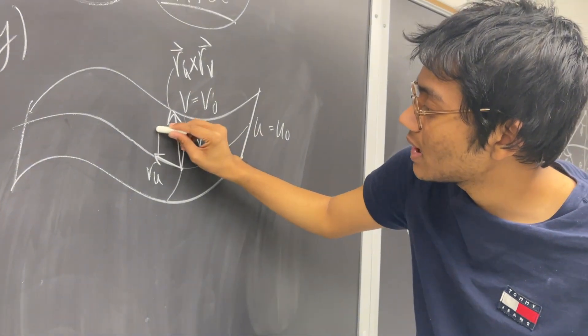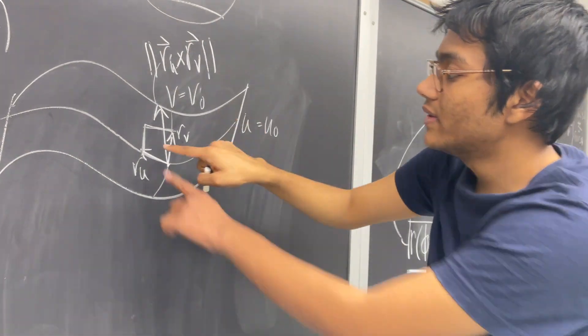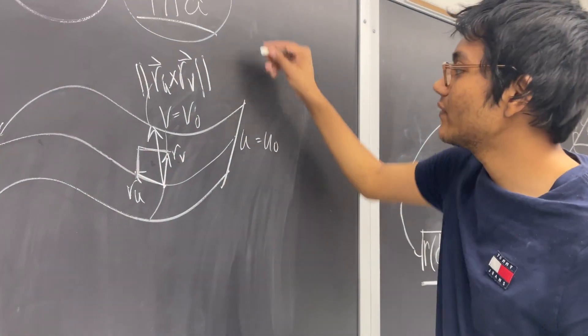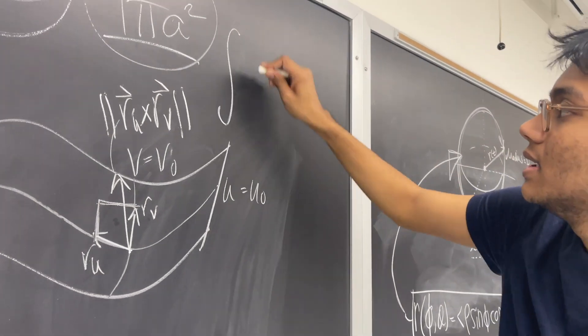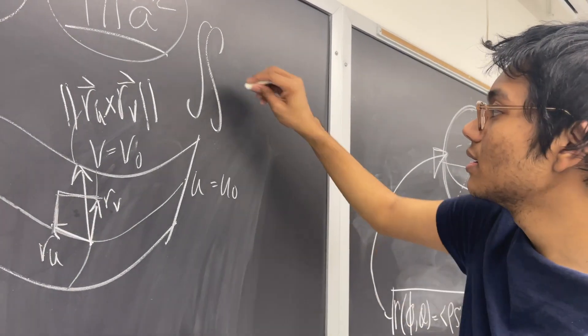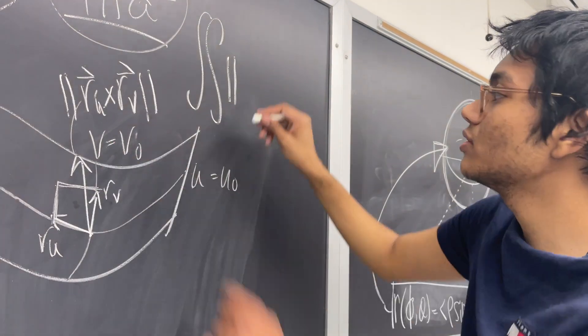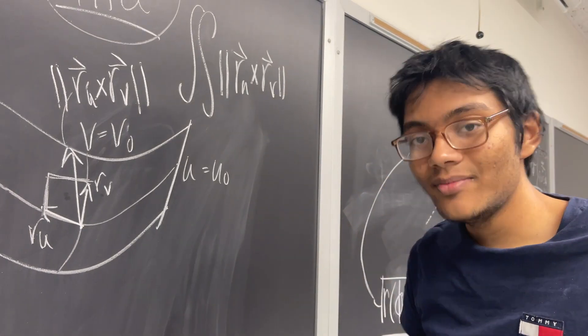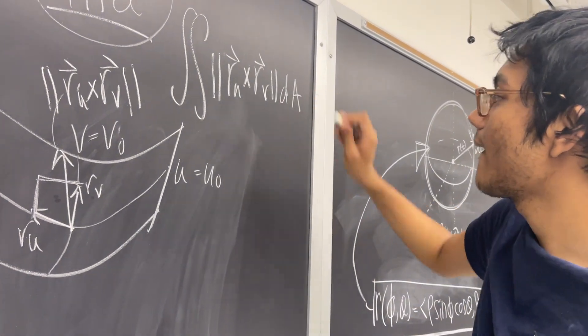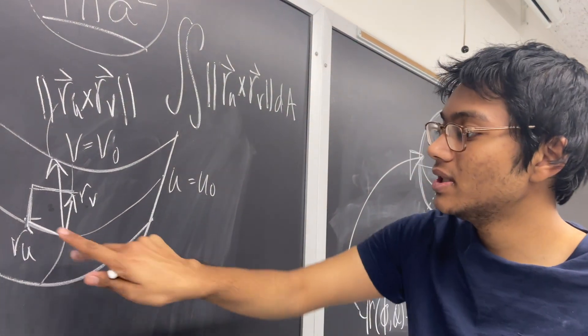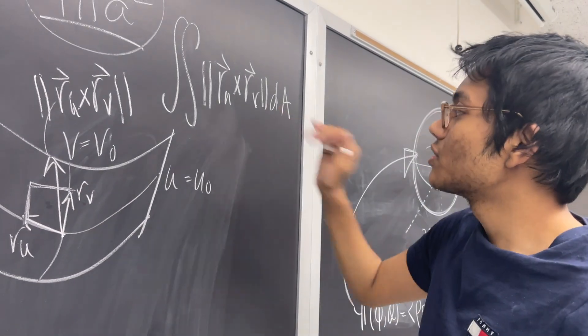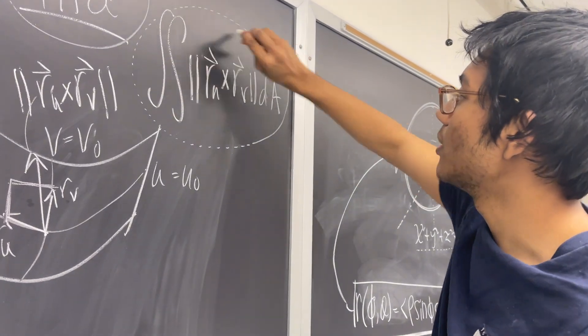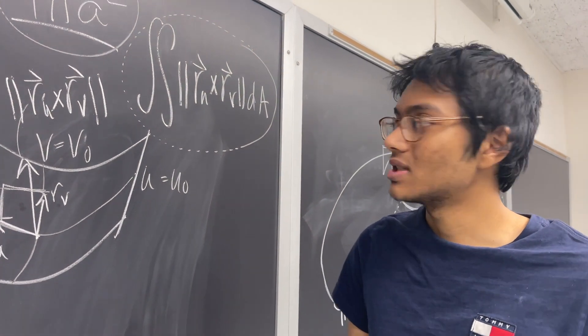The cross product, the magnitude of the cross product gives me the area of this little patch. And so what I'm going to have is the surface area is going to be the double integral of the magnitude of my cross product, |r_u × r_v| times dA. So times a little change in dU and a little change in dV. So that is the formula for surface area that we are now going to employ to find the surface area of the sphere.